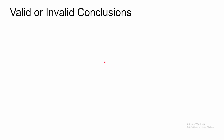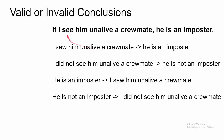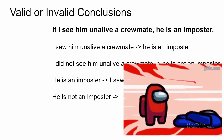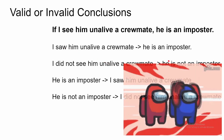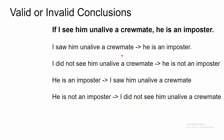So let's take a look at some valid and invalid conclusions. This is the implication — the universal truth. We know that if I see him on the live crewmate, he is an imposter. Let's say I saw him on the live crewmate, so I conclude he is an imposter. Is this valid? Yes — if you saw him on the live crewmate, is he the imposter? Yes, this is a valid conclusion.